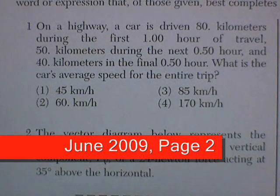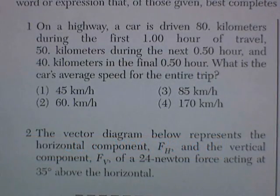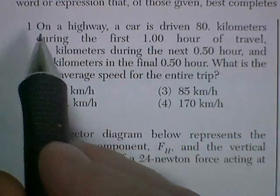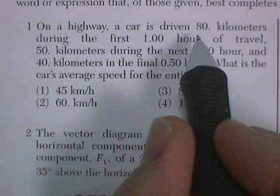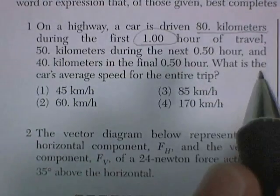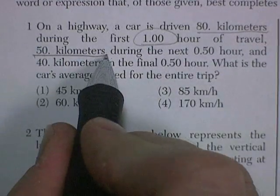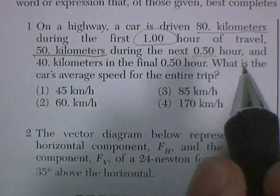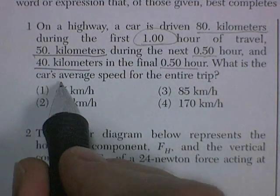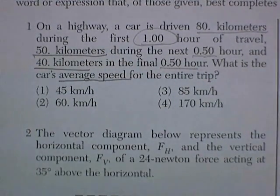Hey, we've got the June 2009 final exam from the New York State Regents. We're going to start with page 2. Don't forget to download a copy of this from the website and play along. Question 1. On a highway, a car is driven 80 kilometers during an hour, and then it goes 50 more kilometers for a half hour, and then 40 kilometers on the final half hour. What is the average speed for the entire trip?